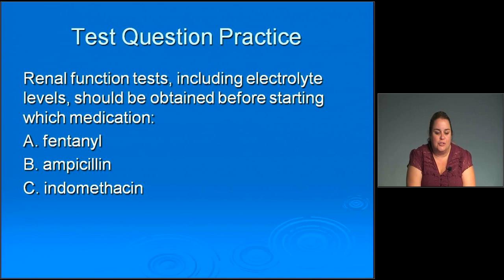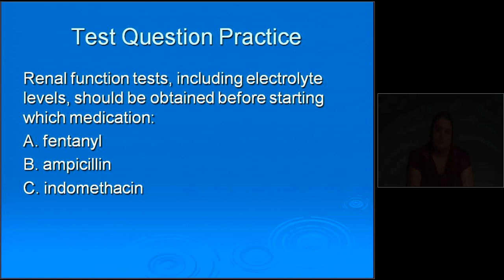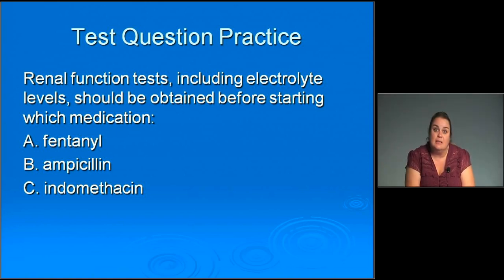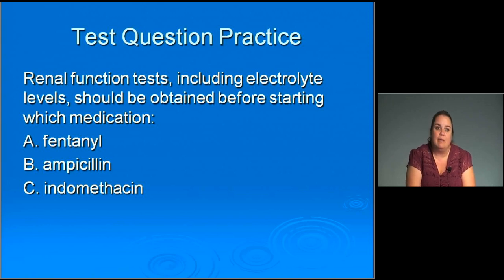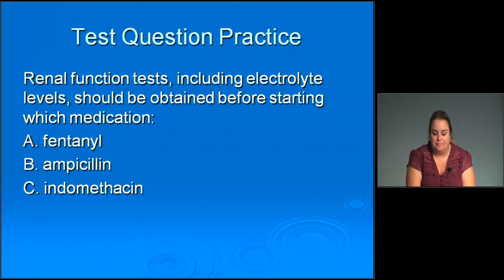Practice question: Renal function tests including electrolyte levels should be obtained before starting which medication? A is fentanyl, B is ampicillin, C is indomethacin. The correct answer is C — indomethacin, because of its possible kidney interaction causing low urine output, so checking renal function before starting that medication is important. That concludes this module.